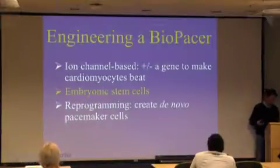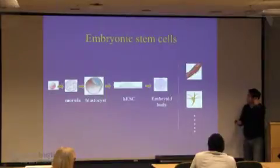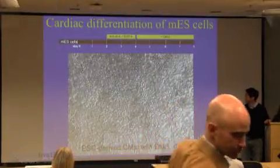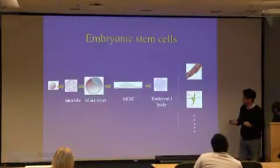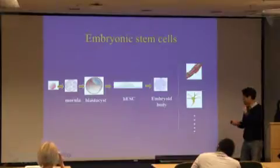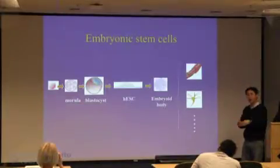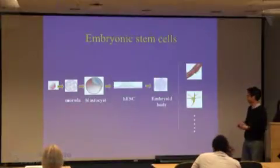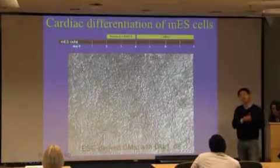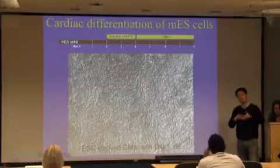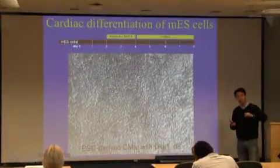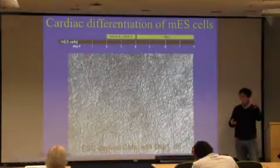The second approach to creating biological pacemakers is using pluripotent stem cells — either embryonic stem cells or iPS cells. Embryonic stem cells are derived from the inner cell mass of a blastocyst. By definition, ES cells can be cultured indefinitely and give rise to all parts of our body. Over the last 10 years, the pluripotent stem cell field has matured to the point that the efficiency of getting cardiac myocytes from ES cells or iPS cells can reach almost 95% to 98%.